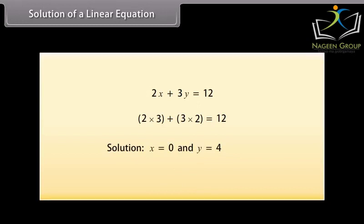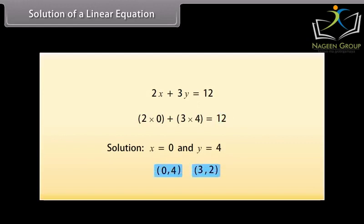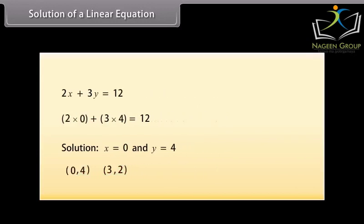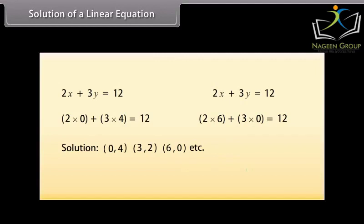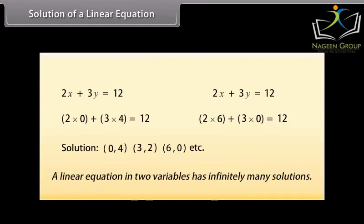Similarly, (0, 4) is also a solution because substituting X equals 0 and Y equals 4 gives 12. We have found at least two solutions. Can you find any other? Is (6, 0) also a solution? Yes, (6, 0) is also a solution because substituting X as 6 and Y as 0 gives 12. Many other solutions can be found, and there is no end to the different solutions of a linear equation in two variables. Therefore, a linear equation in two variables has infinitely many solutions.